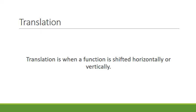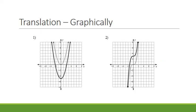Translation is when a function is shifted either horizontally or vertically. When talking about translation graphically, we look at the parent function and see how it moved to get to the transformed function. For the first example, I'm going to use this point right here and see how it moved to get to the new function. It had to move 5 units down.